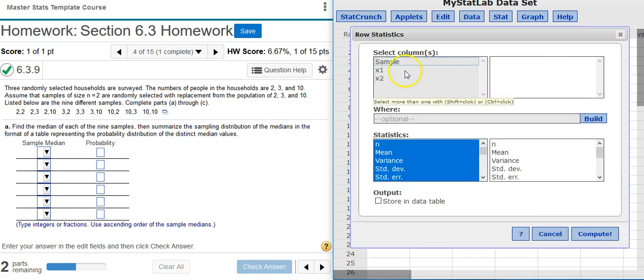Here I'm going to select the actual columns where my sample data is located. Notice that's in the X1 and X2 column. I can select more than one column by holding the Shift key or the Ctrl key on my keyboard while I click the mouse.